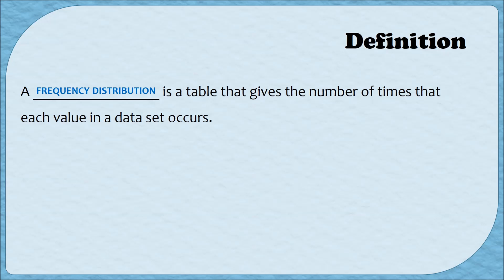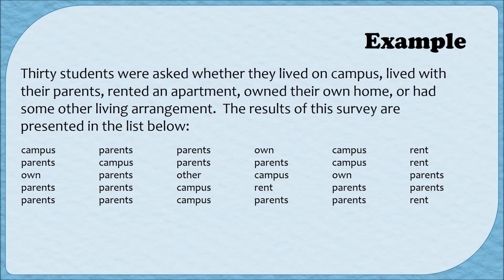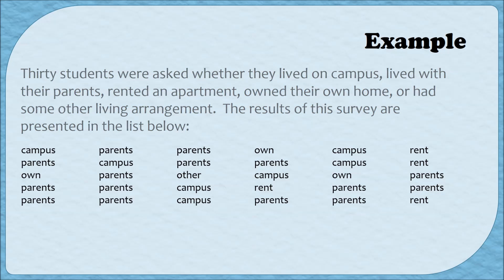Let's get started and create a frequency distribution. In this example, 30 students were asked whether they live on campus, with their parents, rent an apartment, own their own home, or have some other living arrangement. The results of the survey are presented in the list below. I'm going to move the data up to the top so we have a little more room to create our table.